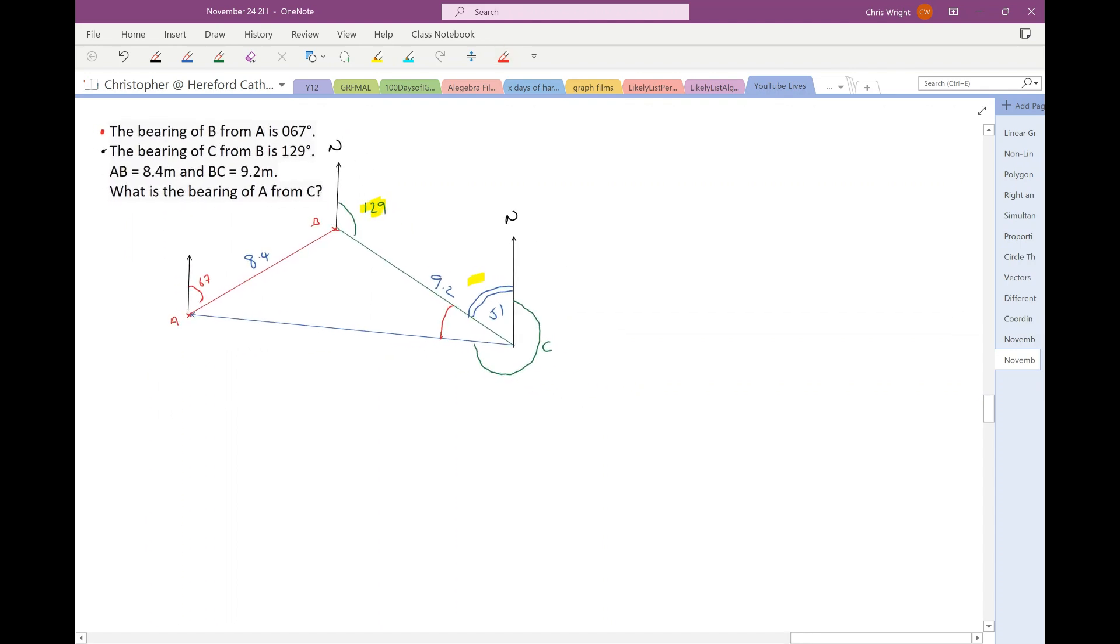So, how am I going to find that red angle? Well, I'm looking at a triangle here, this triangle. Okay, so what can I find out about that triangle? Well, this angle here at B is allied to the 67. So, 180 minus 67 is 113. I better label that B again, otherwise I'll forget when that's B. So, that means that I can find this top angle here. 360 minus 113 minus 129. Uh-huh, that's 118. Okay.